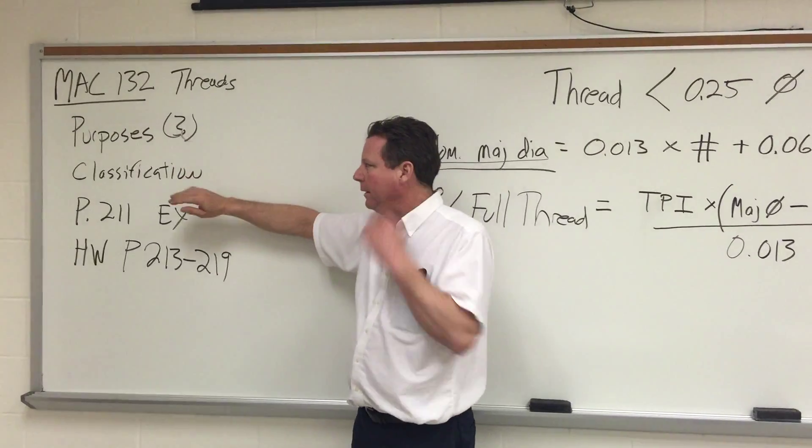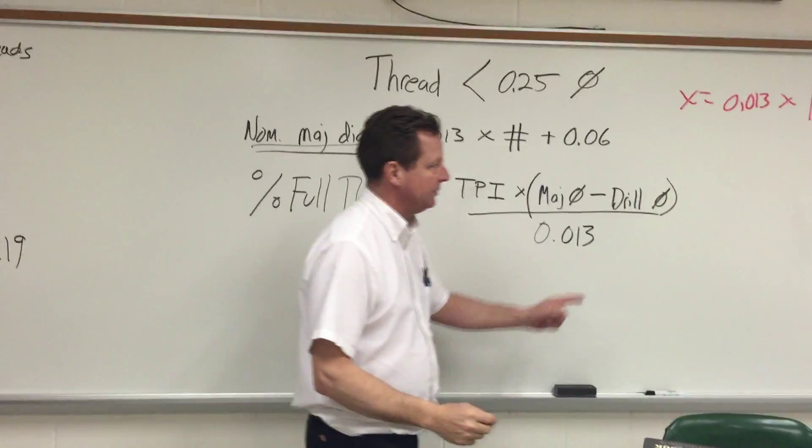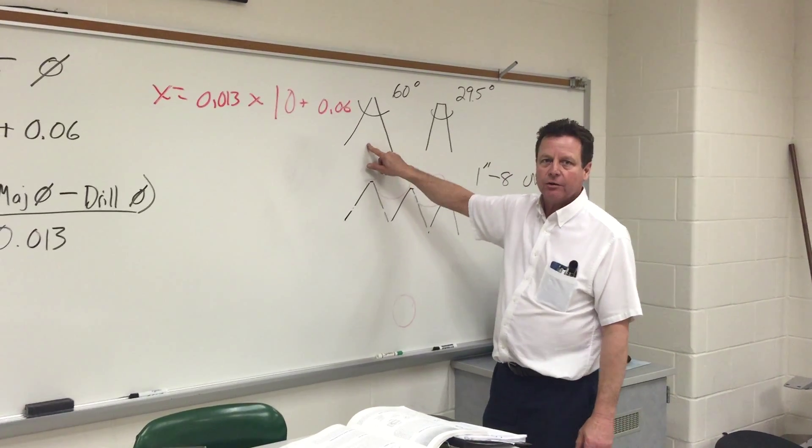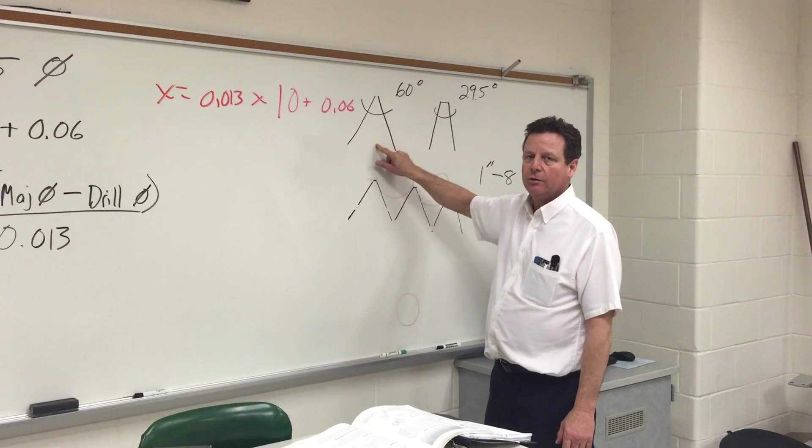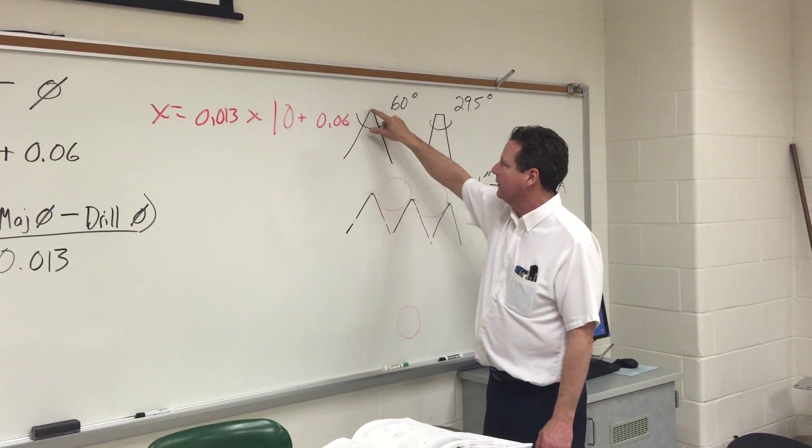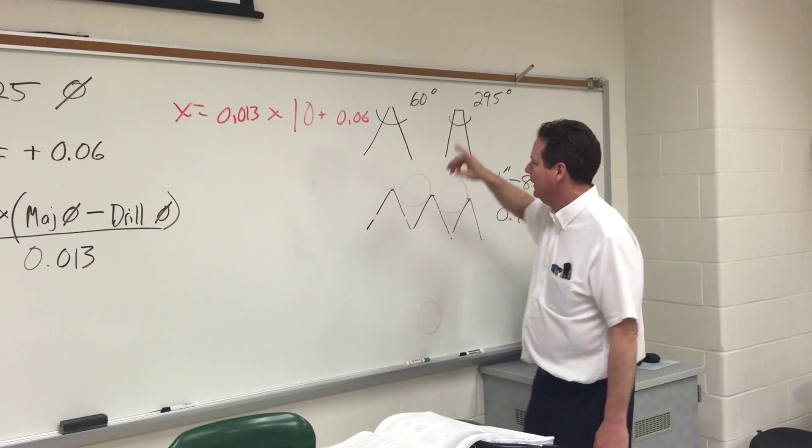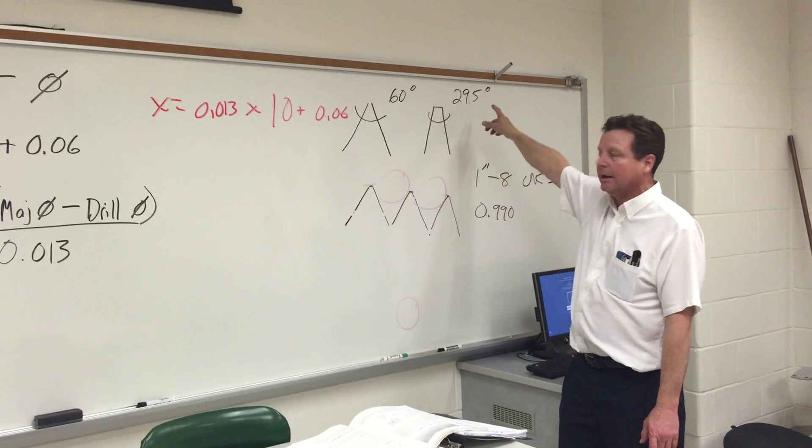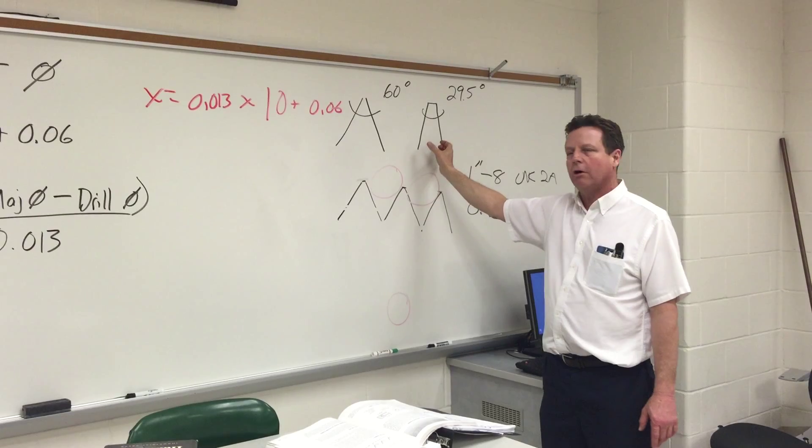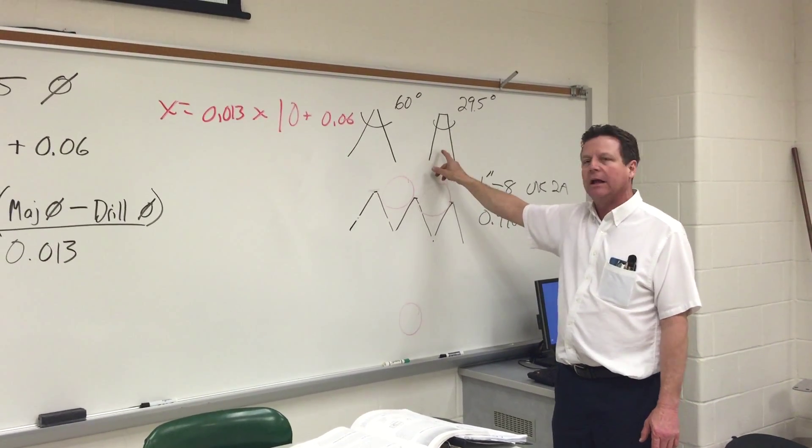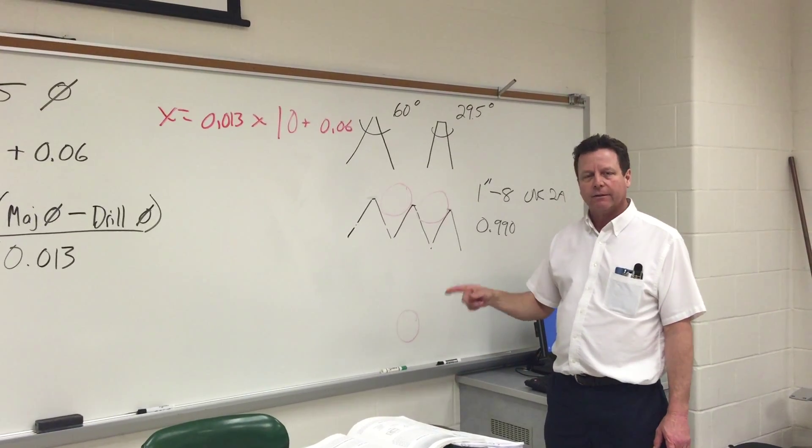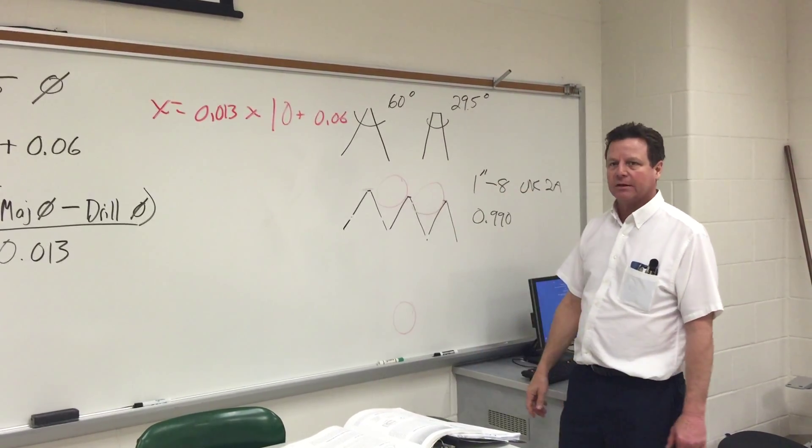We went over the classifications of threads. All you're going to see while working with us here is standard unified national threads. They have a 60-degree thread form with usually a little flat at the top. Acme thread has a 29.5-degree included angle and are much stronger threads. The lead screw on your lathe has Acme threads.